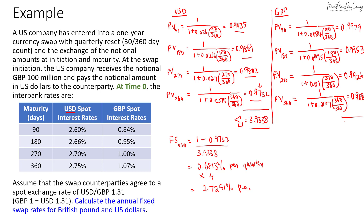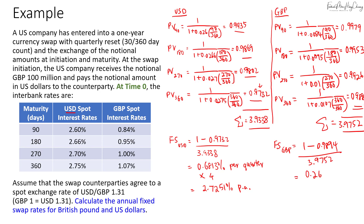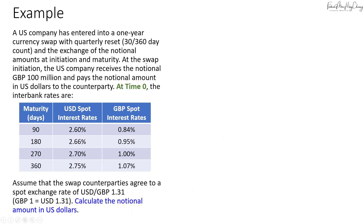Summing all four pound PV factors gives a total of 3.9752. The pound fixed swap rate is (1 − 0.98944) / 3.9752 = 0.2667% per quarter. Annualizing by multiplying by four gives 1.0666% per annum — that's the fixed swap rate for the pound side.